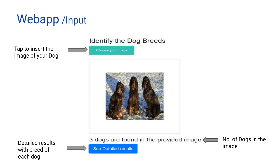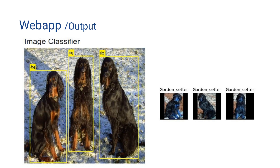In the web app, you choose an image — you can also drag and drop it — and run the code. It gives a count, for example 'three dogs are found in the provided image.' Click 'see detailed results' to see the breed of each dog. Here it detected three dogs and identified the breed as Gordon Setter — all three are Gordon Setters.